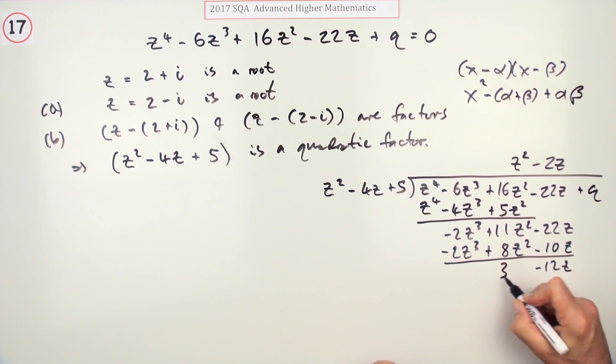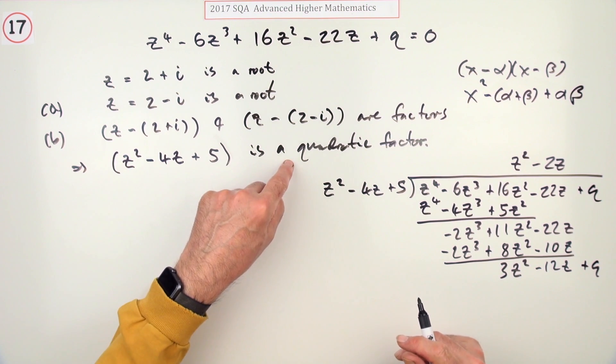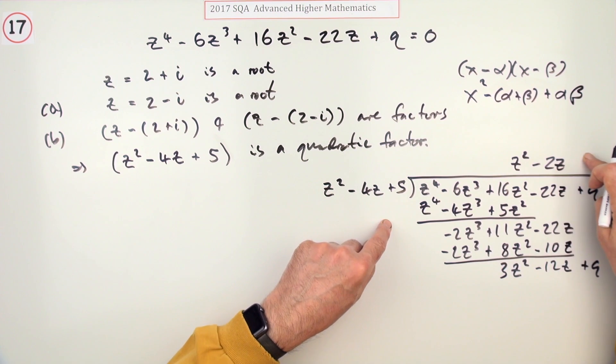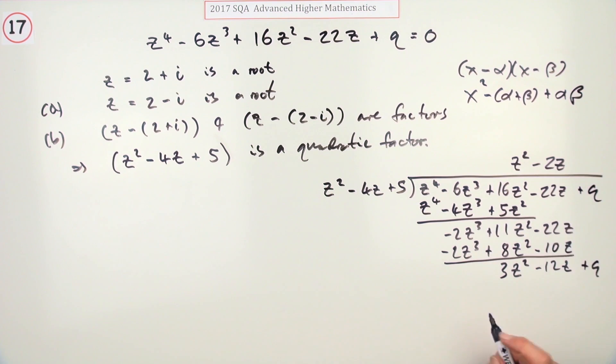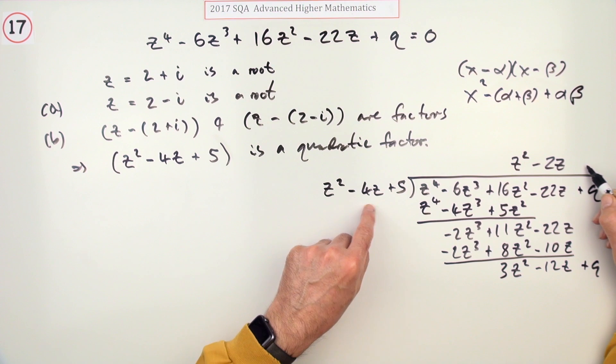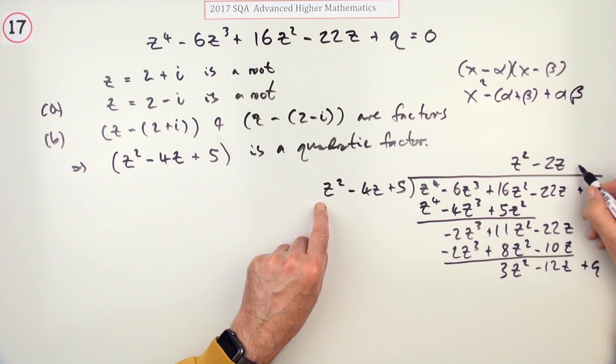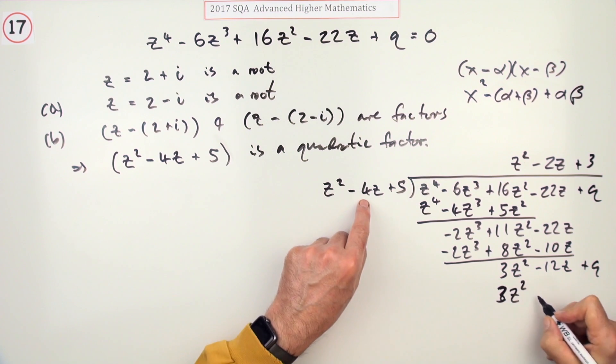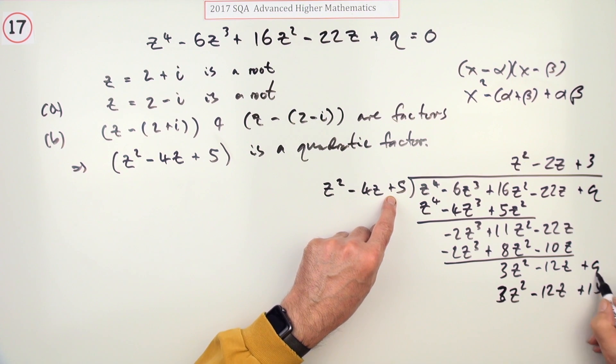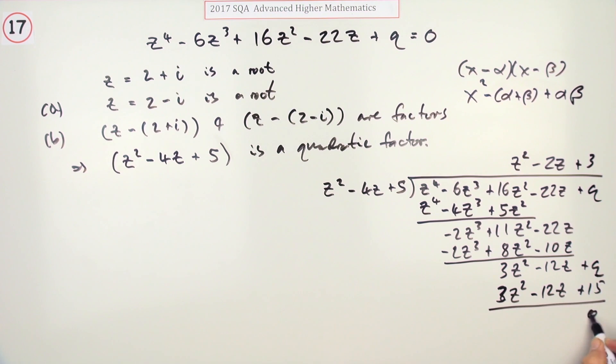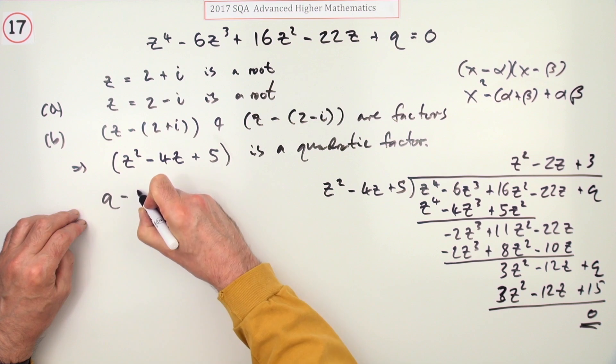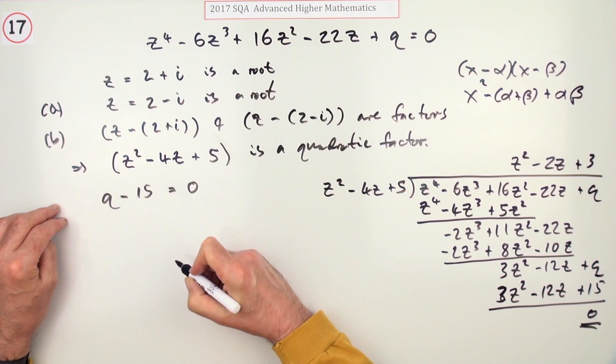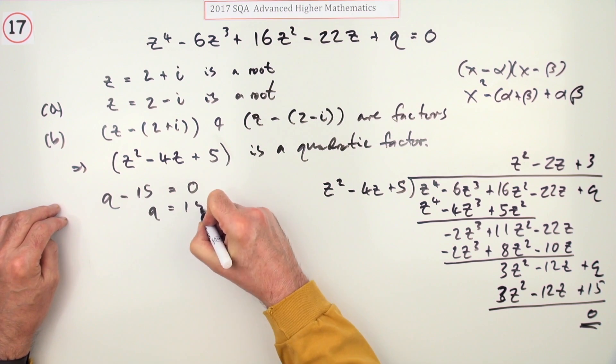Bring q down. If that is a quadratic factor, this must go in exactly with no remainder. The number that works must be +3, giving 3z² - 12z + 15. This gives +15, so q - 15 = 0, which means q = 15.